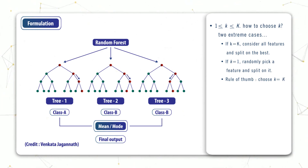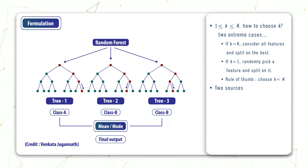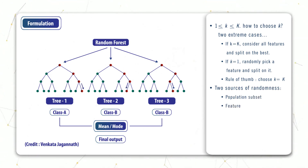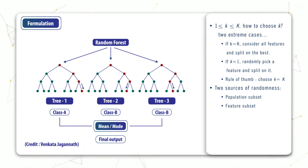One thing to note is that random forests have two different sources of inherent randomness: the first comes from the random sampling of the dataset, and the other comes from the random sampling of the feature set itself. This is actually a very important property of random forests because it's this randomness which reduces the variance and hence reduces the propensity for overfitting.